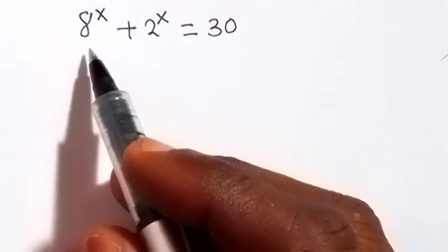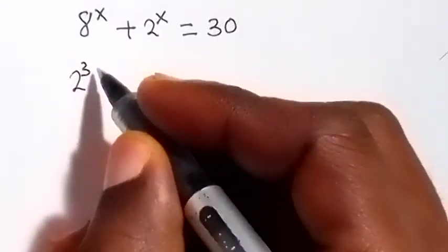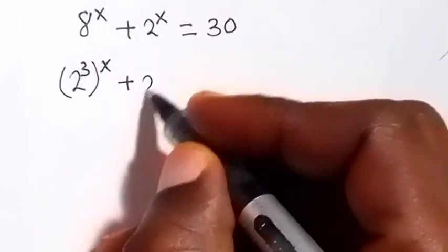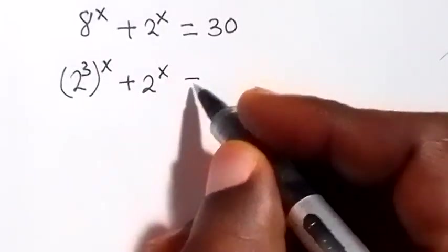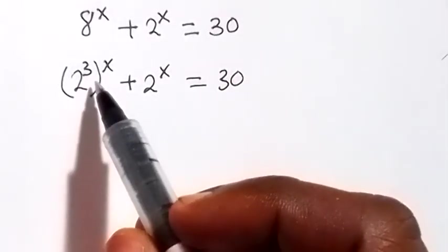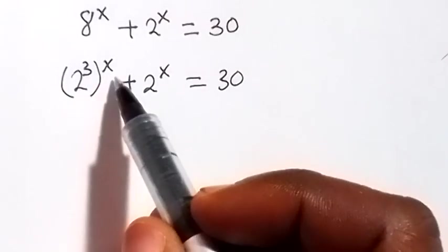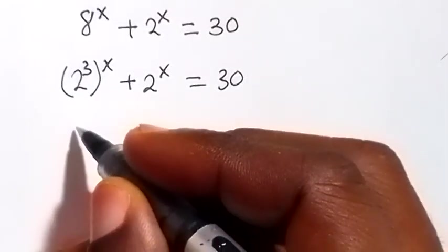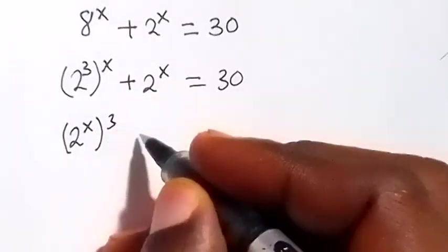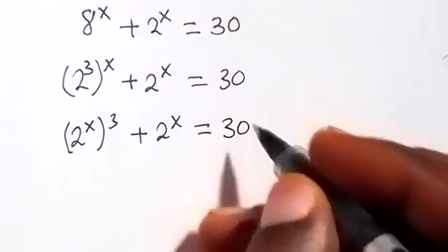Here, let's change it to base 2. That will be 2 raised to power 3, then raised to power x, plus 2 raised to power x, equals to 30. Then, by taking x inside and taking 3 outside from the law of indices, this will be 2 raised to power x, then raised to power 3, plus 2 raised to power x, which equals to 30.